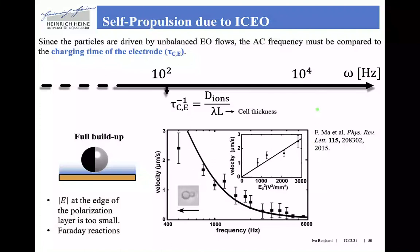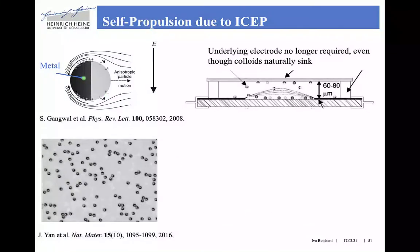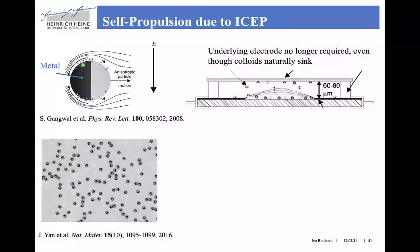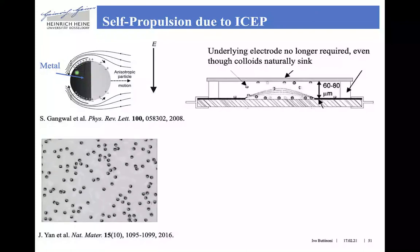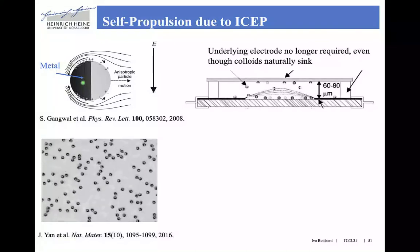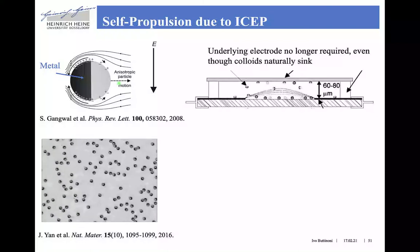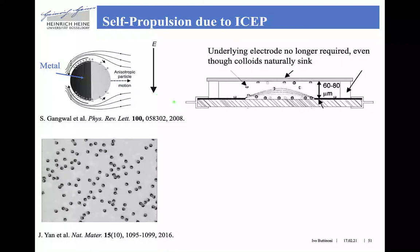If we go to higher frequencies, induced charge electroosmosis becomes essentially negligible — essentially zero. However, net motion can still be obtained if we use particles that are coated with a metal, near which the induced charge slip flow is strong enough to sustain the self-propulsion of these colloidal particles. The setup looks exactly the same as before, but the particles do not necessarily need to be close to the electrode in order to swim.